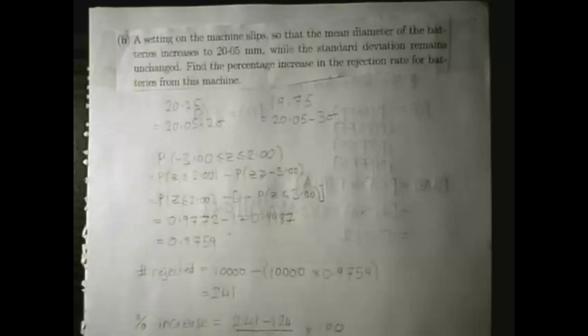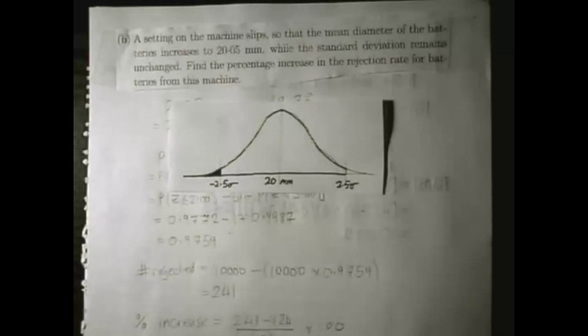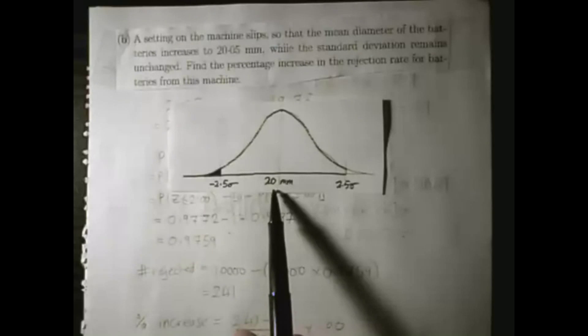The cutoff points for acceptable batteries hasn't changed either. They still need to be wider than 19.75mm and thinner than 20.25mm. This was the situation that we had before where our mean was 20mm.